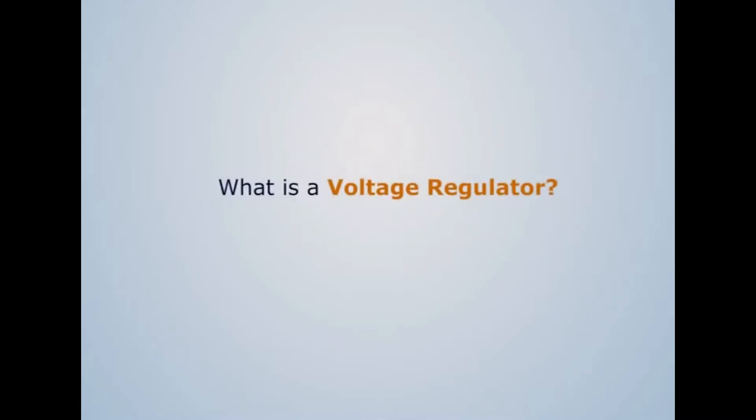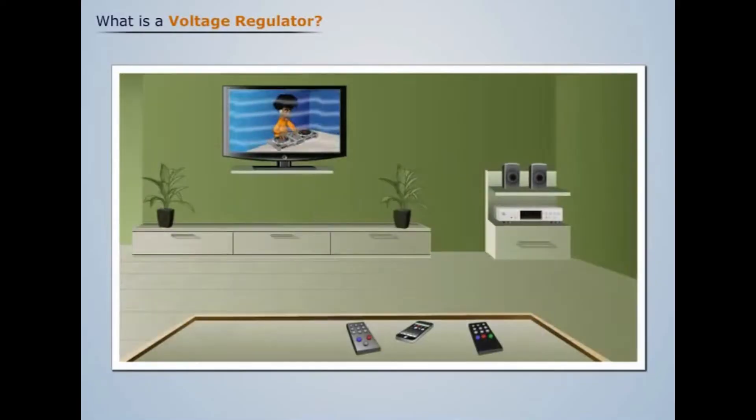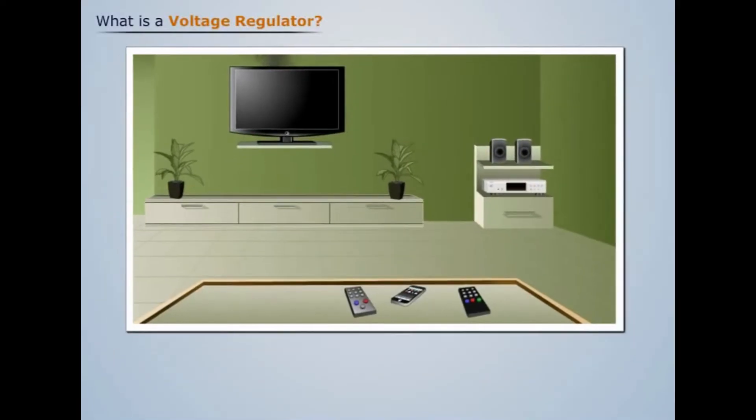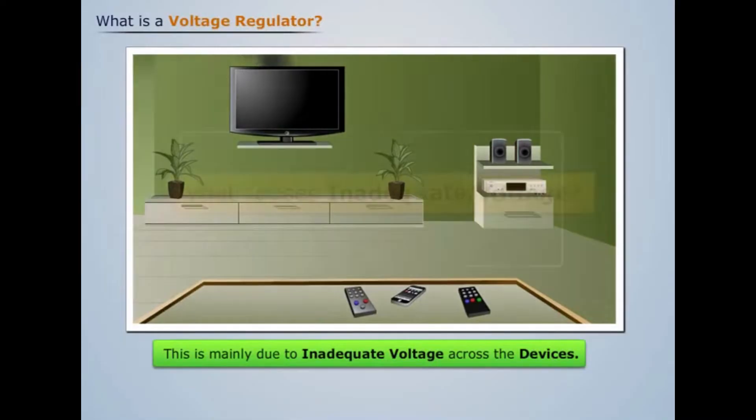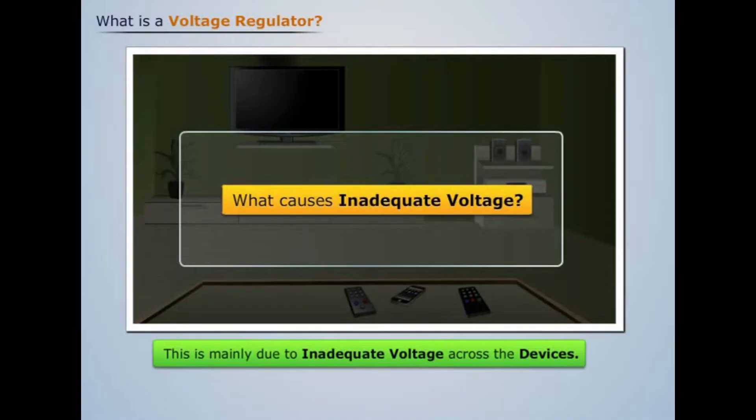What is a voltage regulator? We know that a fluctuating electric supply may damage running appliances and devices. This is mainly due to inadequate voltage across the devices. But what causes inadequate voltage? Let us understand this.